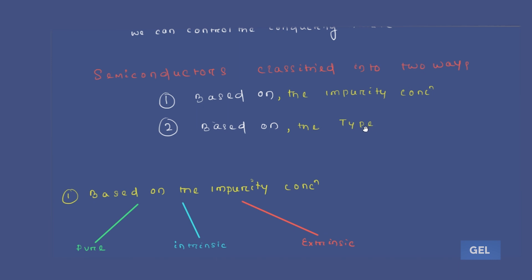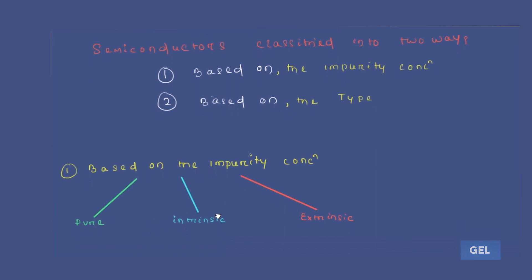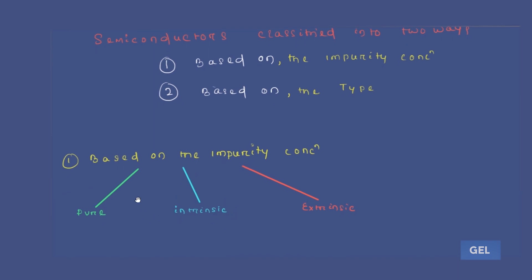There's a little confusion about pure, intrinsic, and extrinsic. In the case of extrinsic semiconductors, we have impurities or dopants added to the material — the semiconductor is not pure; it is doped by some dopant element. From an interview perspective, if an interviewer asks for the classification of semiconductors, don't say just two types — say three types: pure, intrinsic, and extrinsic.